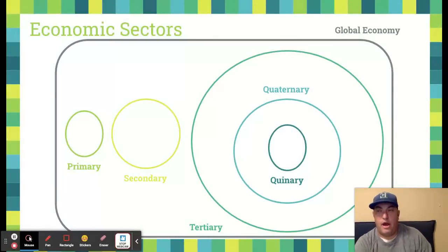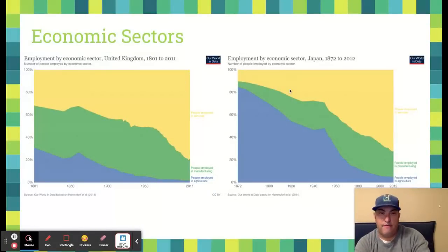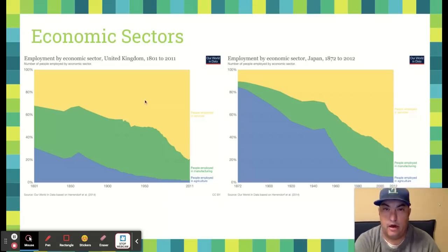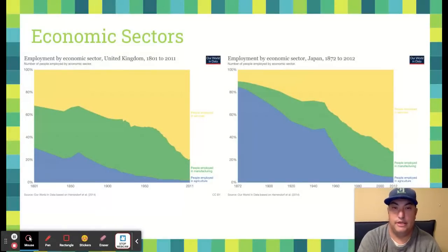On this graph, yellow is the tertiary sector, green is the secondary sector, and blue is the primary sector. There's a lot more money to be made in the tertiary sector. I have two different countries here from one of my favorite websites for teaching AP Human Geography — Our World in Data — awesome visualizations and graphs. I chose the United Kingdom and Japan. You'll notice that the x-axes on both graphs are different: the UK starts way back in 1801, Japan doesn't start until 1872. We end in almost the same place — 2012 for Japan, 2011 for the UK.